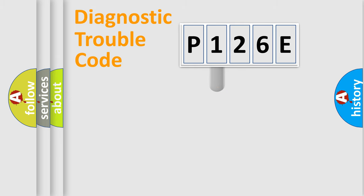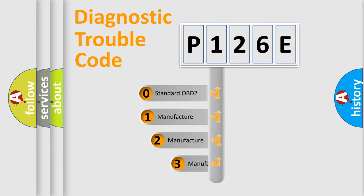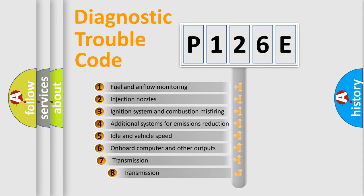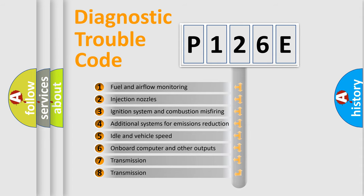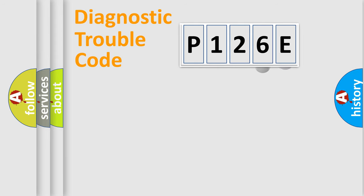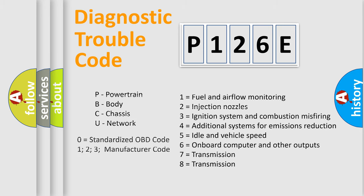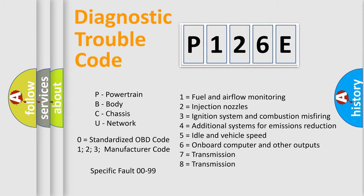This distribution is defined in the first character of the code. If the second character is expressed as zero, it is a standardized error. In the case of numbers 1, 2, or 3, it is a more specific car-specific error expression. The third character specifies a subset of errors. This distribution is valid only for the standardized DTC code, and only the last two characters define the specific fault of the group.